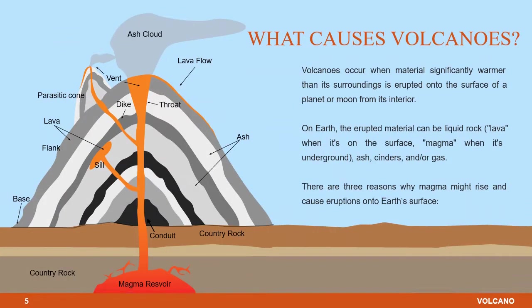Now we'll figure out what causes volcanoes. Volcanoes occur when material significantly warmer than its surroundings is erupted onto the surface of a planet or moon from its interior. On Earth, the erupted material can be liquid rock, ash, cinders, and or gas. There are three reasons why magma might rise and cause eruptions onto Earth's surface.